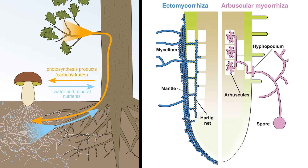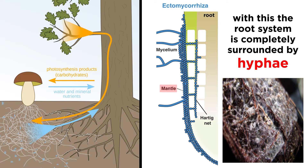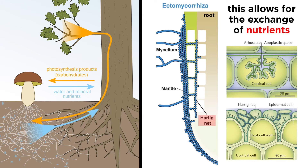However, when fungi in the phylum Basidiomycota form mycorrhiza, they specifically form ectomycorrhiza. Structurally, ectomycorrhiza have the root system completely surrounded by a layer of hyphae called a mantle. Some of the hyphae penetrate the outer layer of the root, forming a network called the Hartig net. The Hartig net allows the fungus and the plant to become closely connected, allowing for the exchange of nutrients such as sugars, nitrogen-containing compounds, and amino acids. Many other mushroom genera we will discuss throughout this series form ectomycorrhizal relationships.